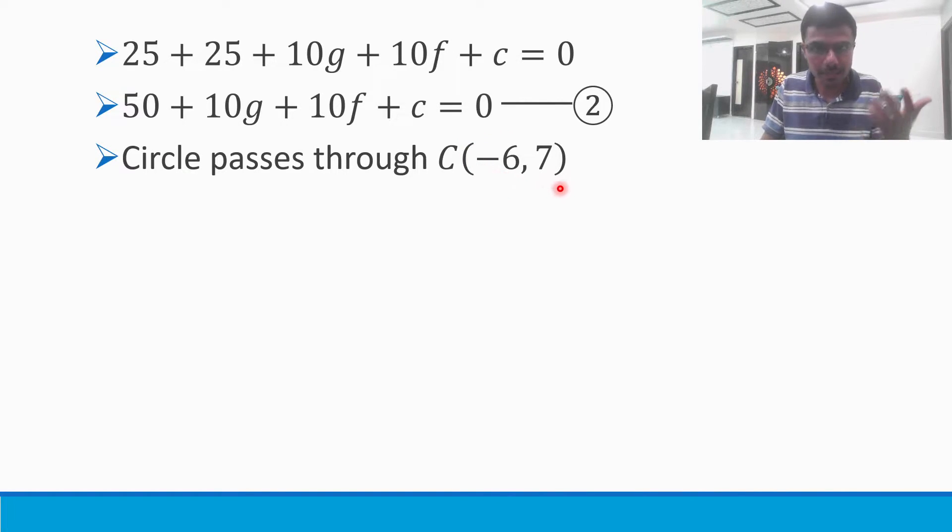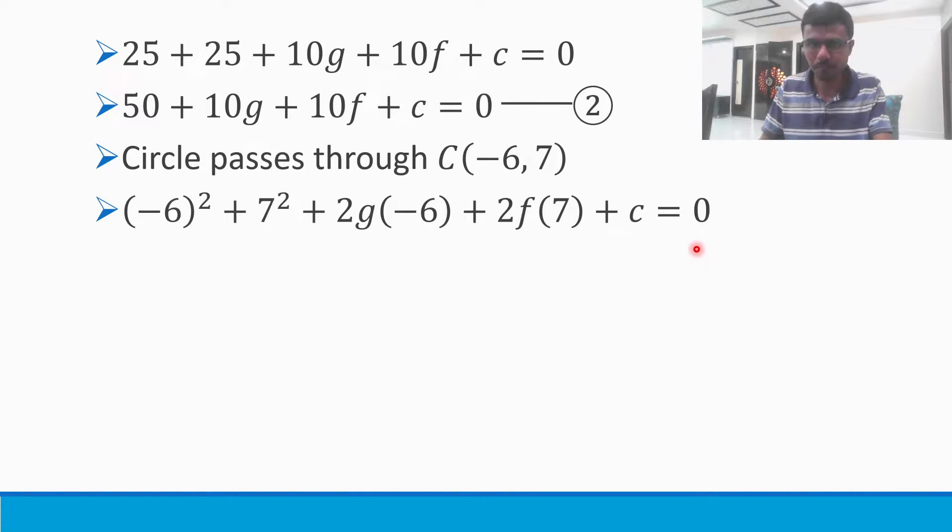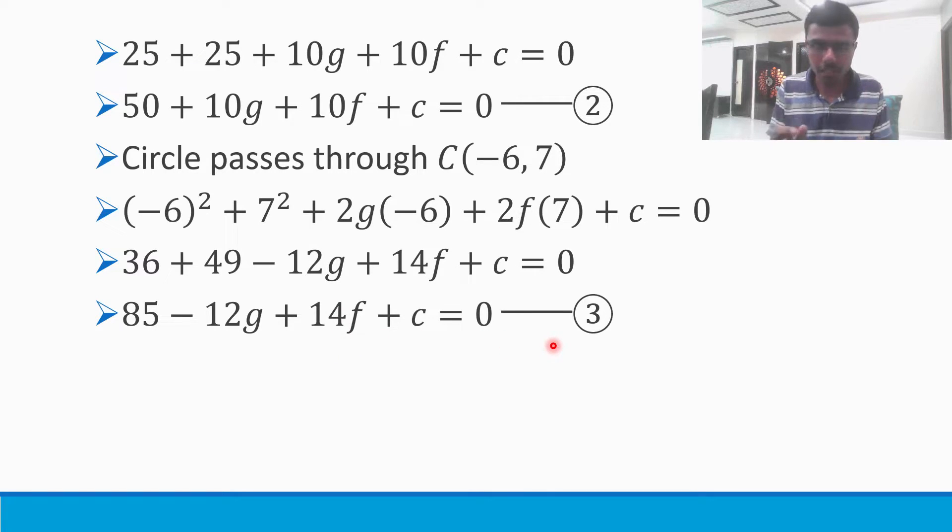Now the circle also passes through (-6, 7). So in that equation x² + y² + 2gx + 2fy + c = 0, just put (-6, 7) in place of x and y. If you simplify, this is my third equation.